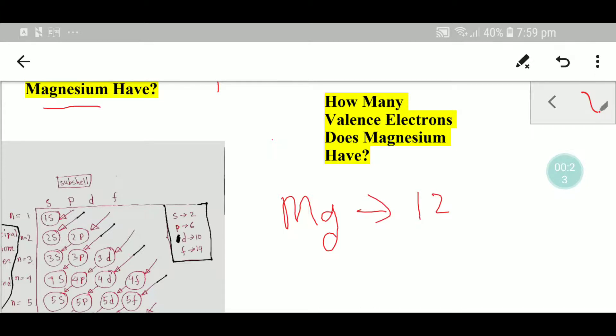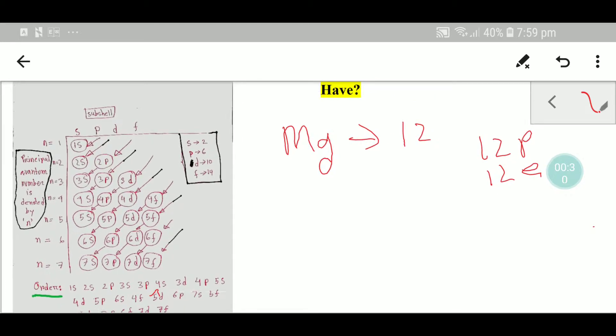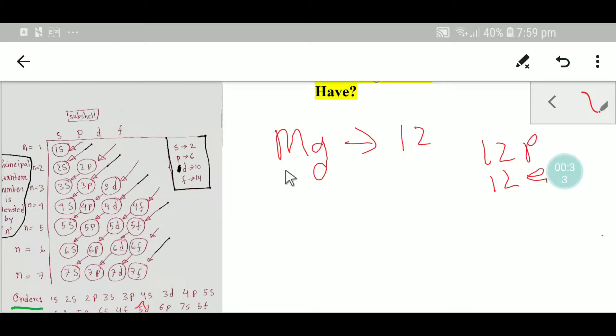This means that magnesium has 12 protons and 12 electrons. In the second step, we'll do the electronic configuration of magnesium. As we know that the number of electrons in magnesium is 12, let's get started.